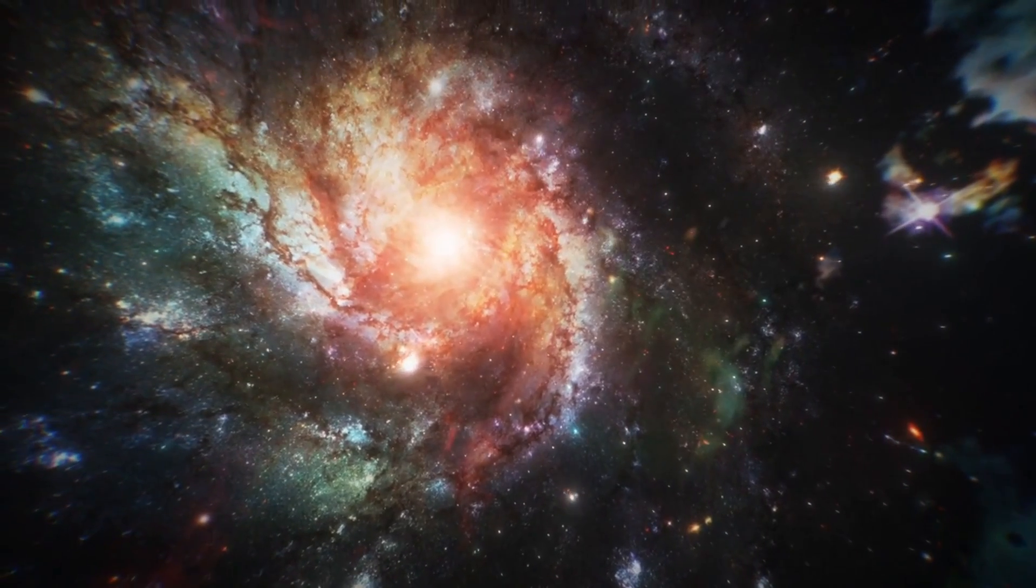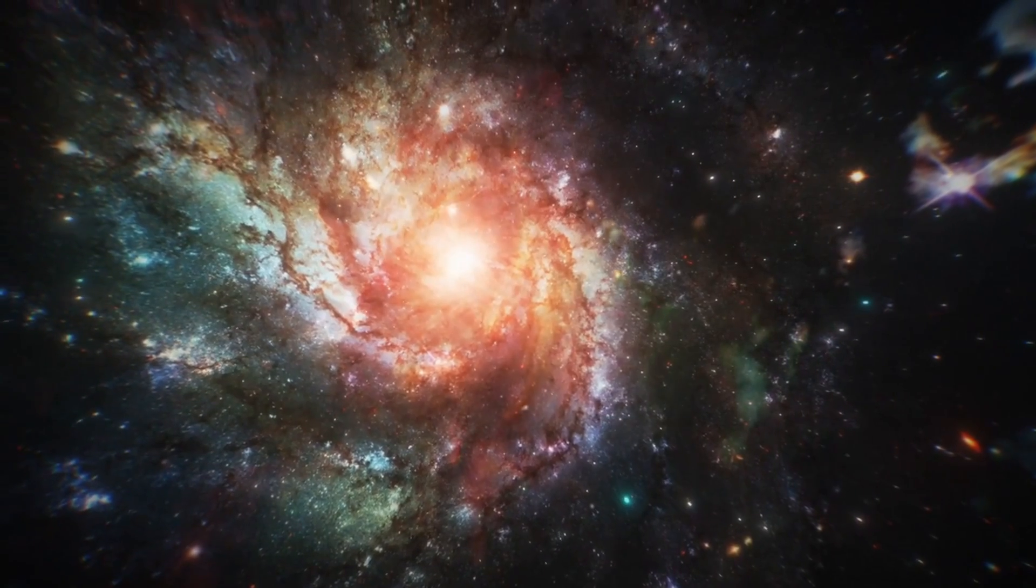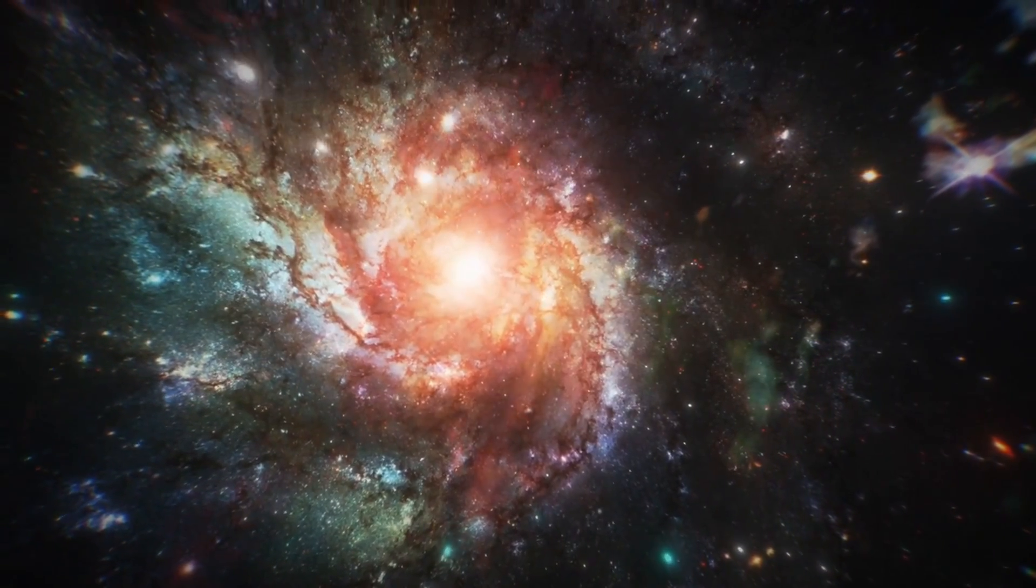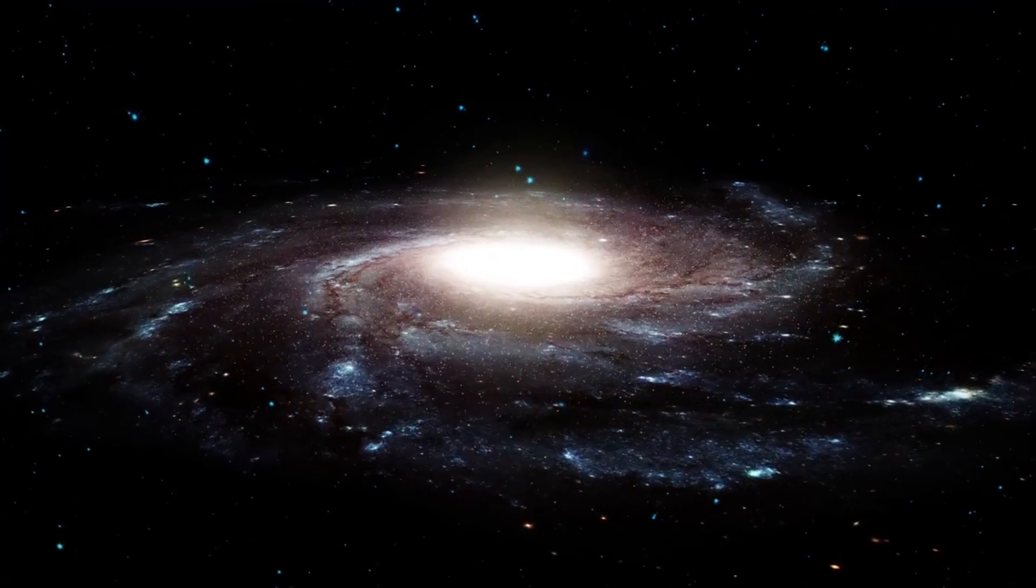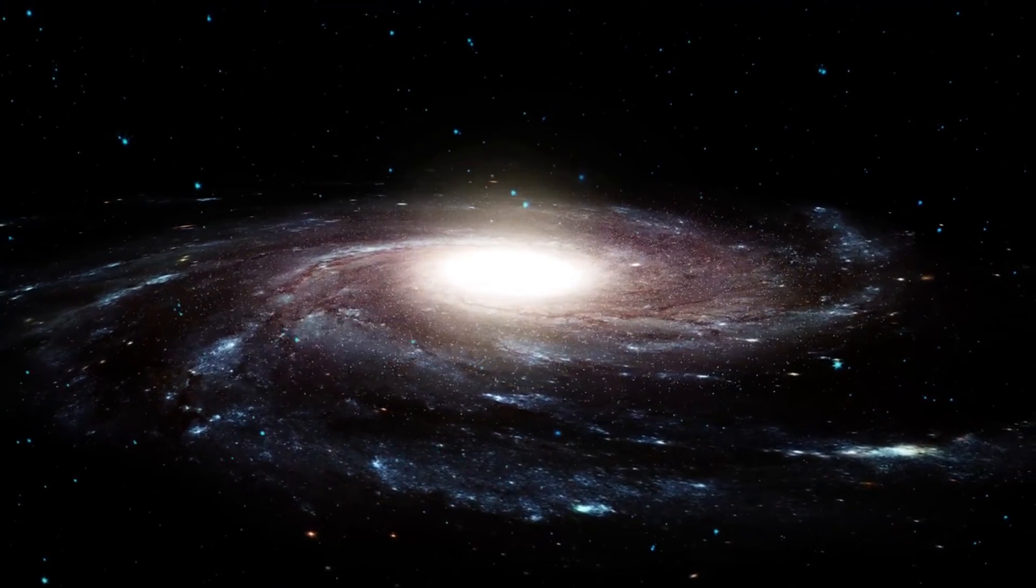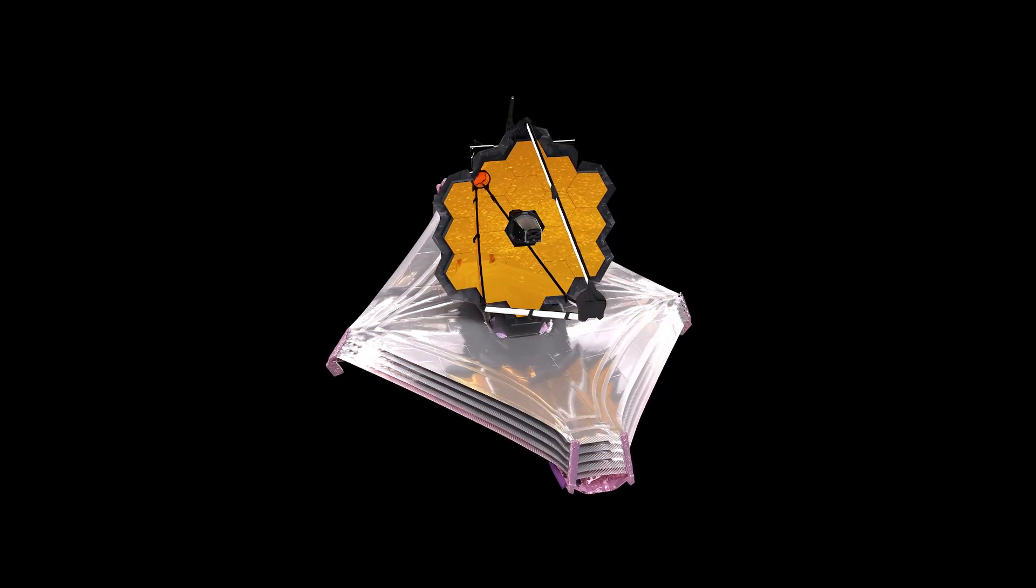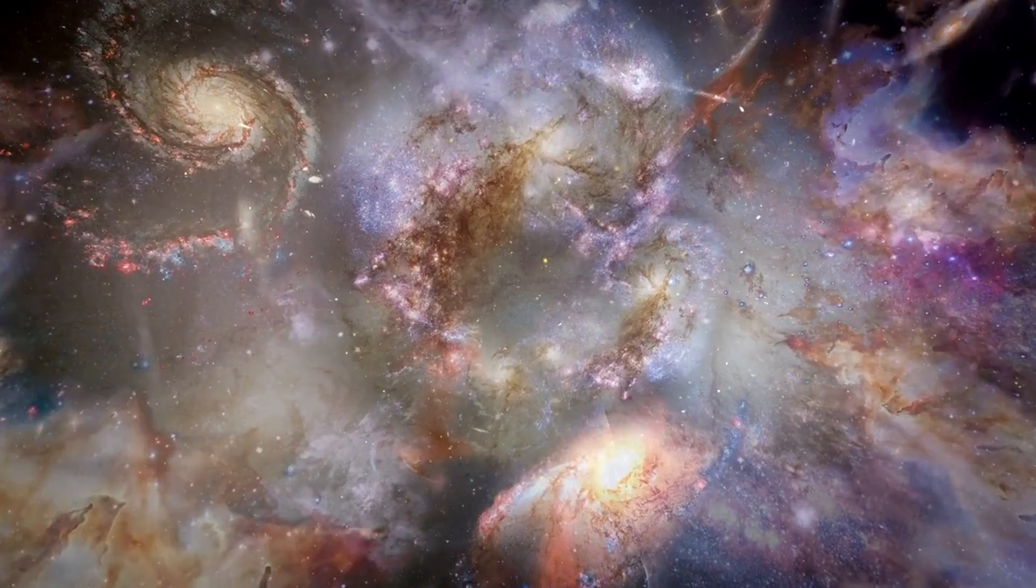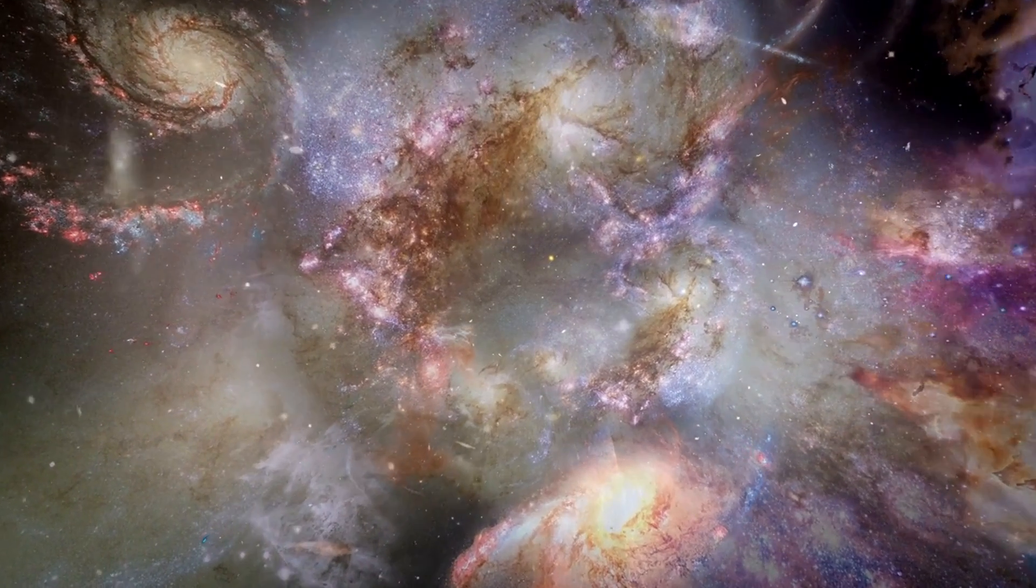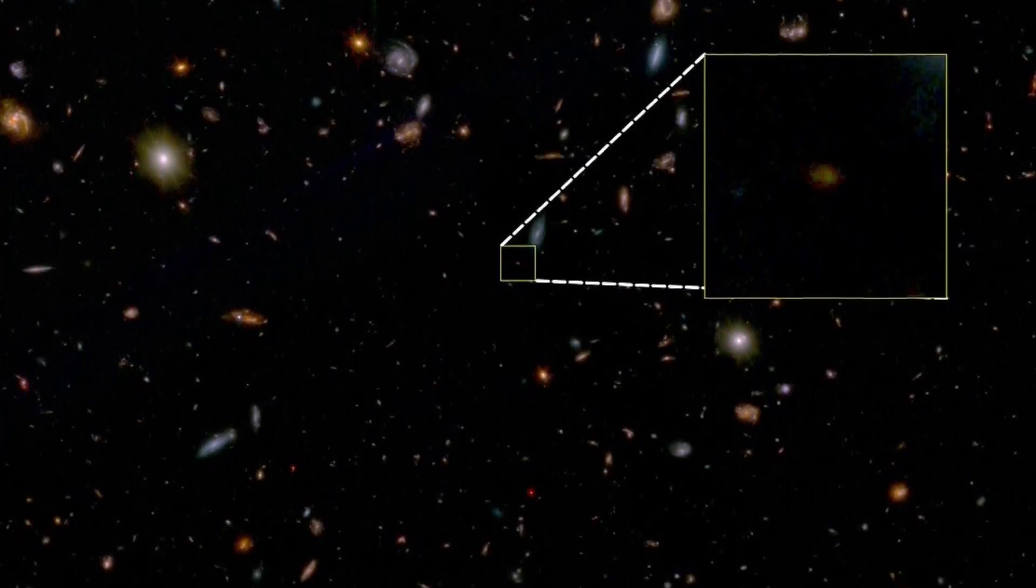Most galaxies in the universe undergo a long and gradual evolution of star formation, lasting billions of years before they become dead. However, some galaxies can die very early and rapidly due to internal or external factors that quench their star formation. This is the case for the galaxy JADES-GS-z7-01-QU, which was observed by the James Webb Space Telescope when the universe was only 700 million years old.